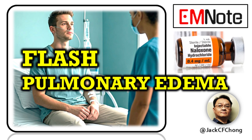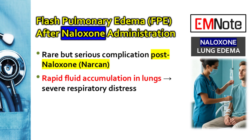Today, we're going to talk about a rare but very serious complication you might see after giving naloxone. It's called naloxone-induced flash pulmonary edema. Here's how we'll break it down: first, we'll define the condition itself and the overdose state that sets the stage. Then, we'll get into the possible causes and what it looks like clinically. And finally, we'll cover how to manage it and what the patient's outlook is.